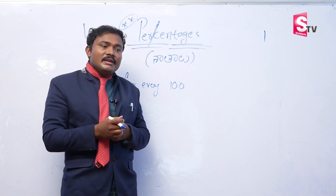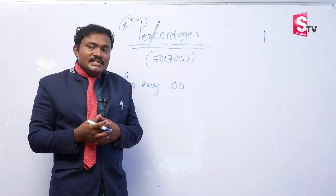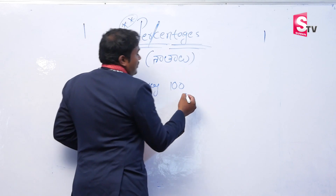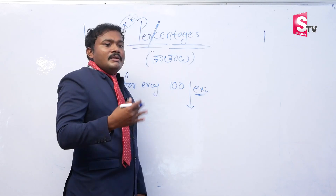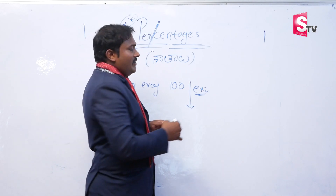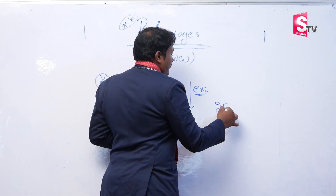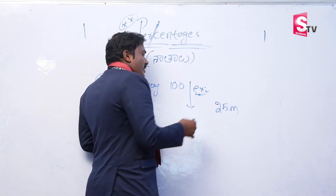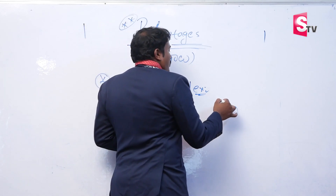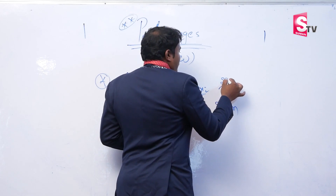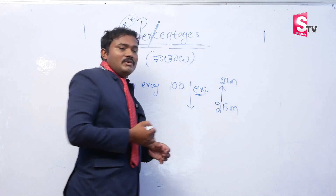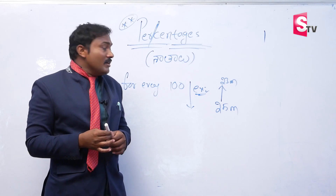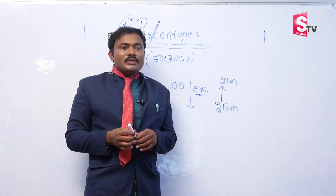Shatham meaning — for every hundred. For example, suppose an exam is conducted for 25 marks. Out of 25 marks, a student scores 23 marks.